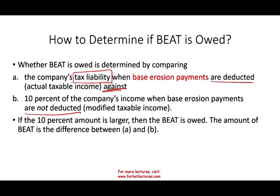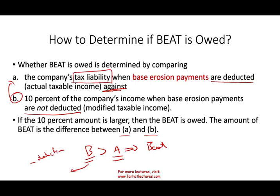If the 10% amount — call it B — is larger than your regular tax — call it A — then BEAT is owed. The amount of BEAT is the difference between A and B. To compute A, just calculate your taxes as usual. To compute B, remove the base erosion payment deductions, compute a new taxable income, multiply by 10%, then compare to A. If B is greater than A, that becomes your new tax bill. The best way to explain this is to work through an example.